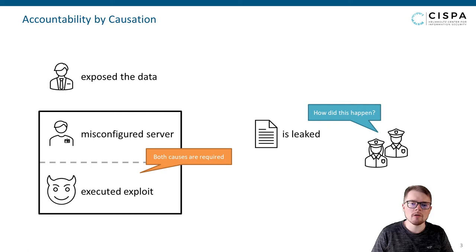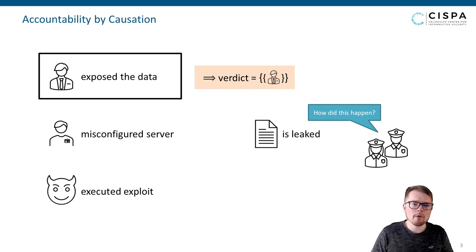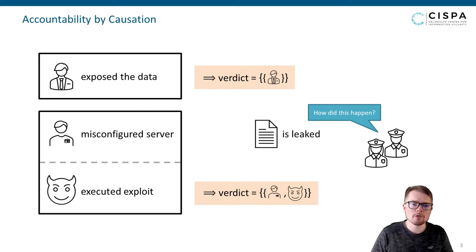The parties whose behavior is the cause of a violation are given by verdicts. A verdict contains all groups of parties that are jointly on their own accountable for a violation. In the actual situation of the example, where the violation is caused by an employee, the employee is solely held accountable. In the situation of the joint cause, both the administrator and the hacker are held responsible.